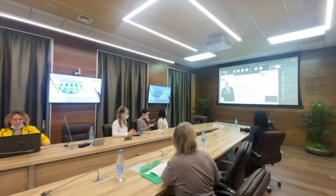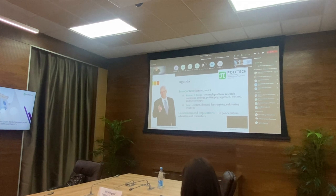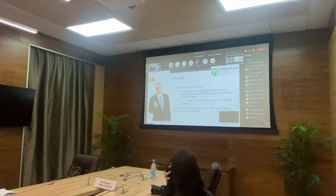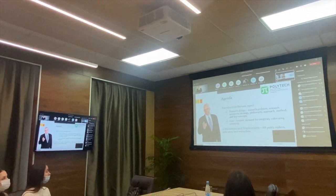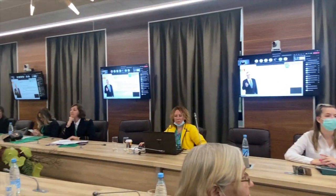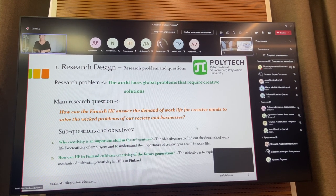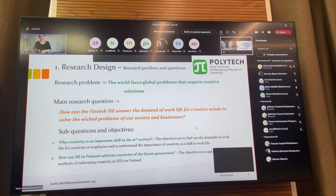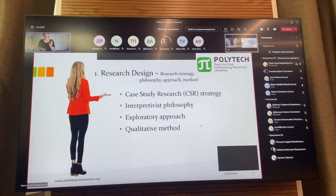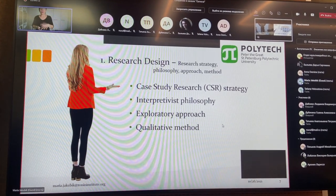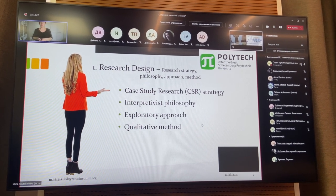The topics will include an introduction to the topic, the research design, and the case context of Finnish higher education — the demand for creativity and how to cultivate it — followed by conclusions and implications. The key questions are: why is creativity an important skill in the 21st century, and how can higher education in Finland cultivate creativity in future generations? This is a case study research approach, following an interpretivist philosophy, using an exploratory approach and qualitative methods.